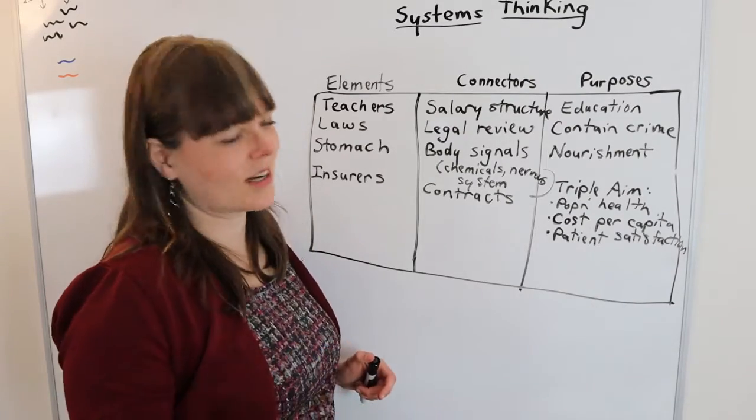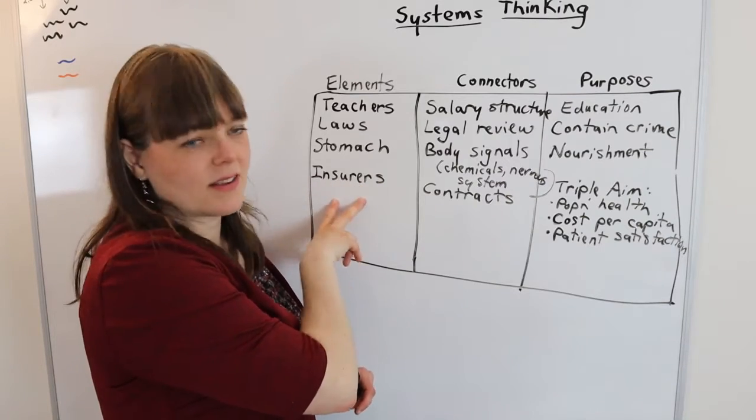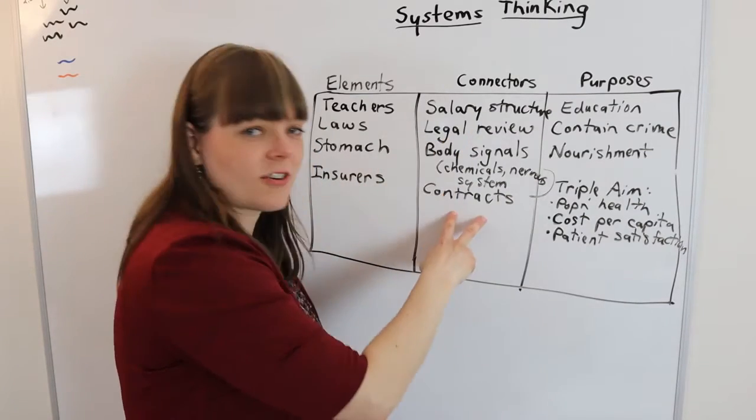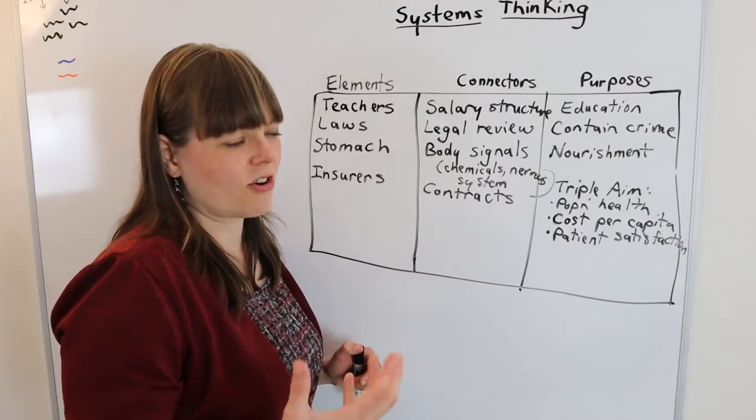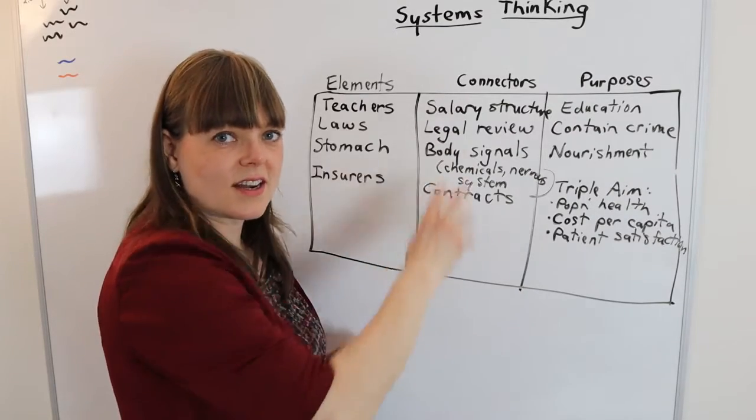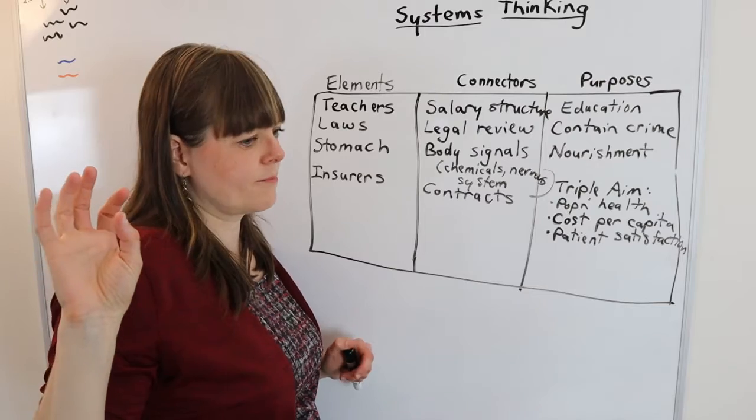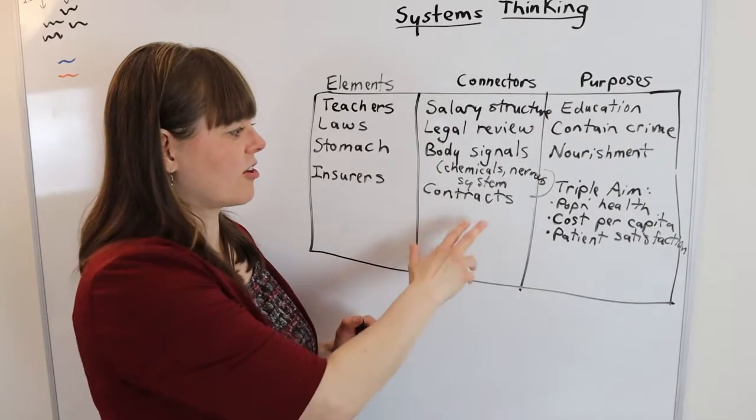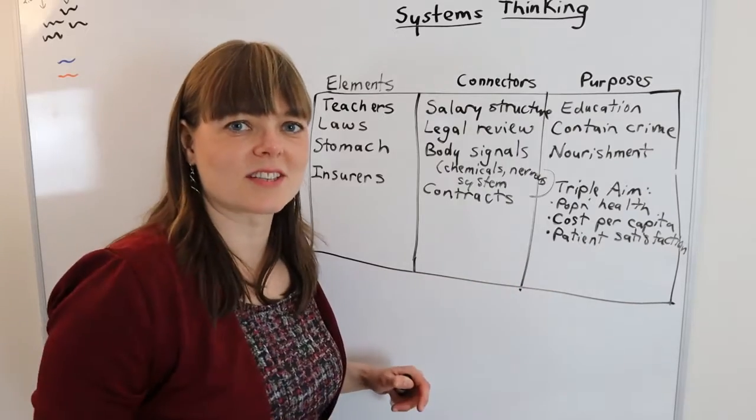And then the health care system, which I study, one element of the health care system is insurance companies. Contracts between insurance companies and doctors and contracts between patients and insurance companies, those contracts connect the different parts, the doctors, the patients, the drug companies, all of that are connected through contracts. And what is the purpose of the health care system?